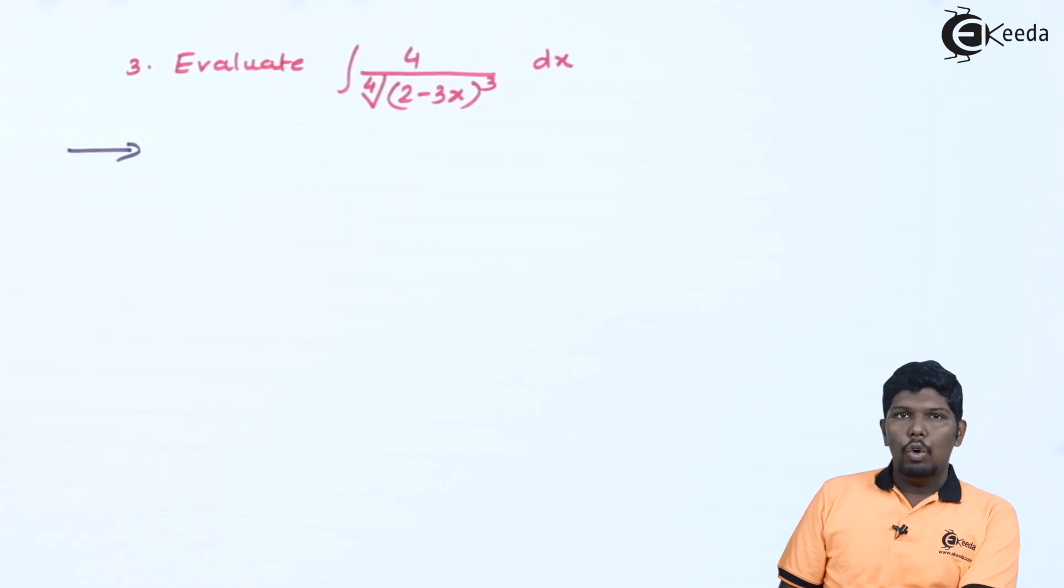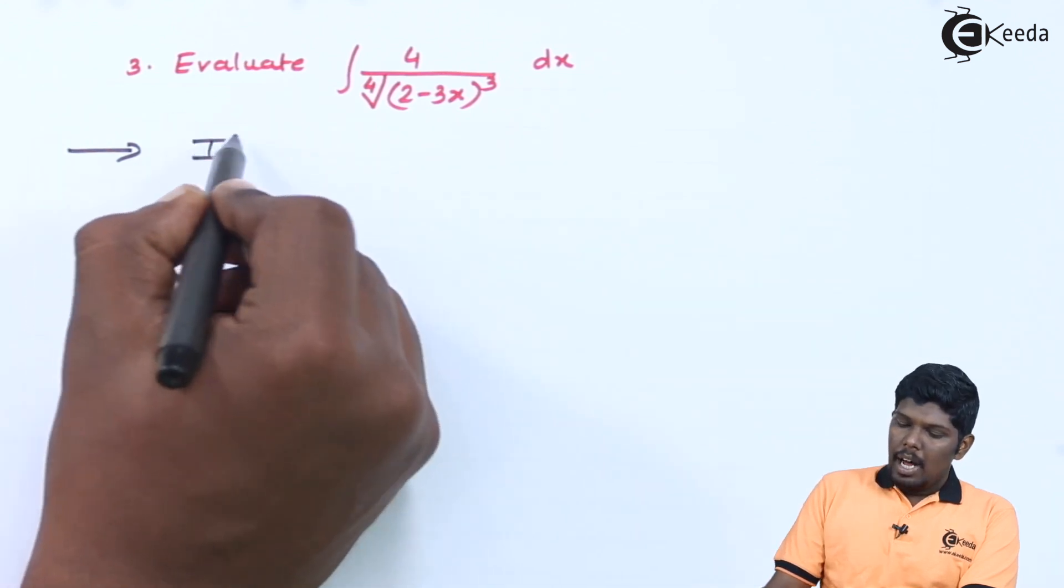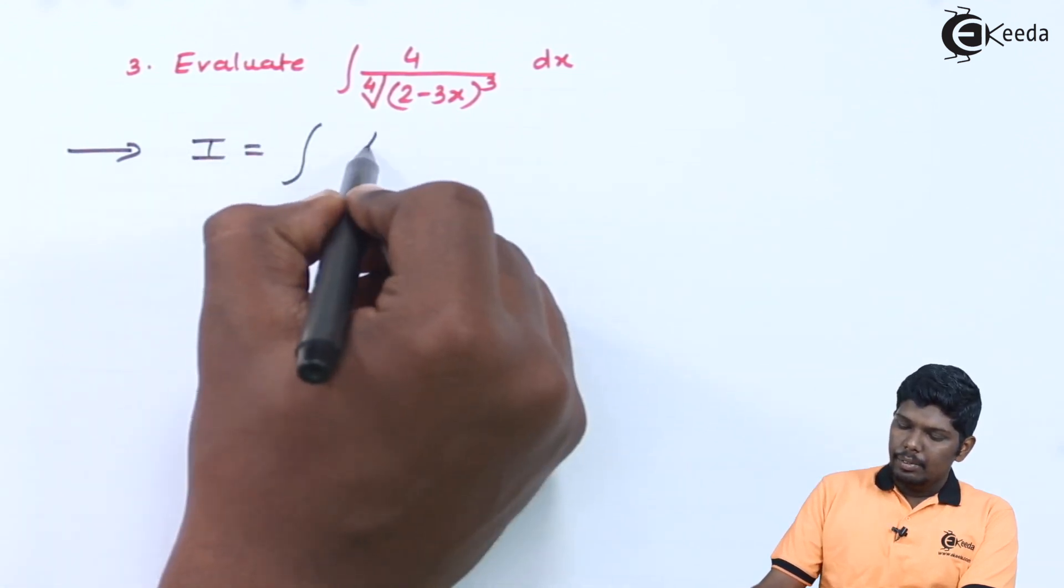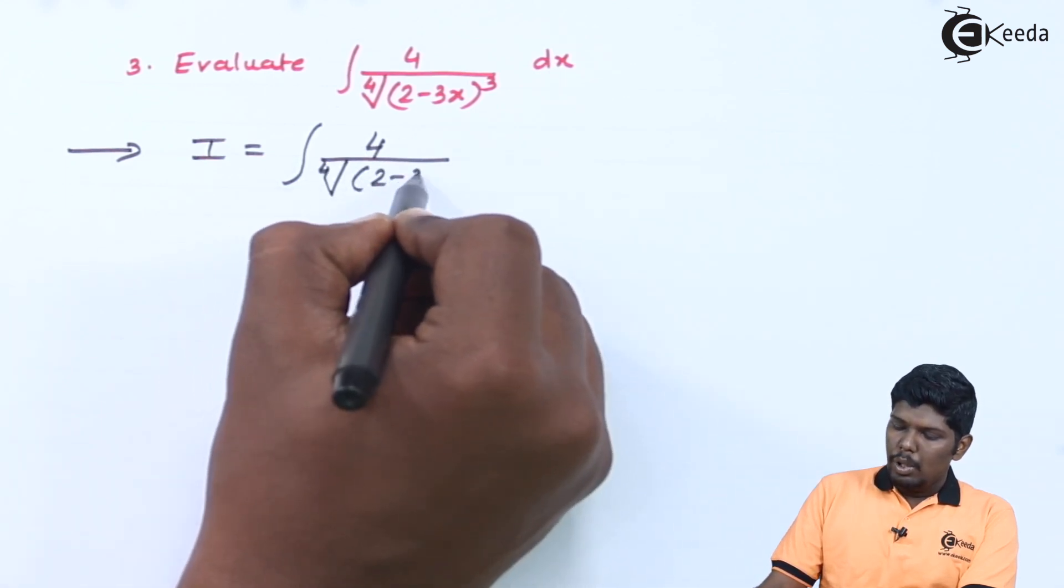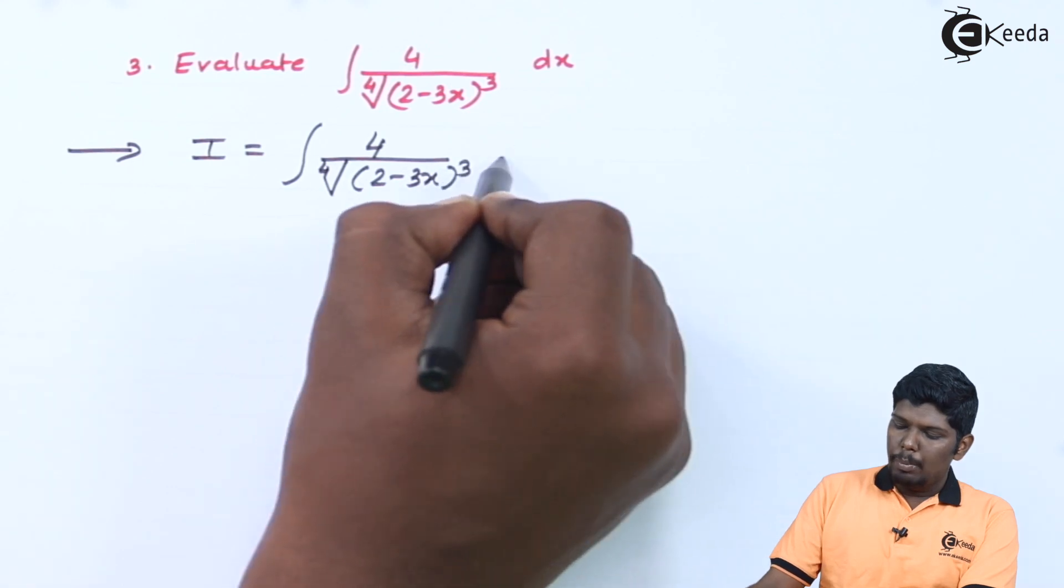Evaluate integral of 4 upon fourth root of 2-3x the whole cube dx. I is given as 4 upon fourth root of (2-3x)³ dx.